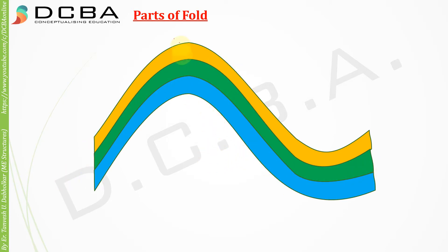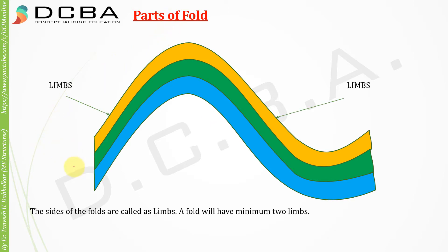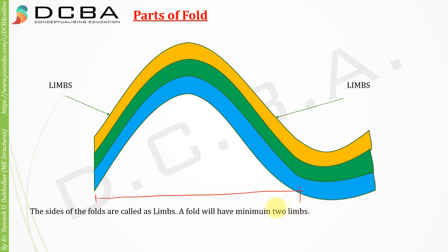Let us study the parts of folds. These legs of the fold are called limbs. This would be considered as one complete fold — from here to here — and one fold will have at least a minimum of two limbs.